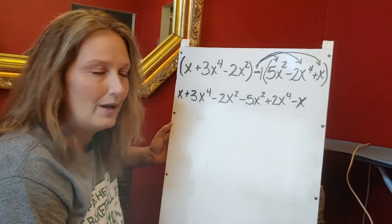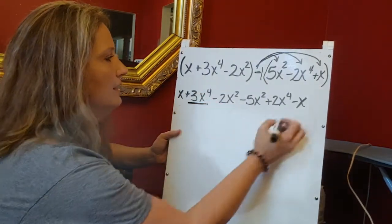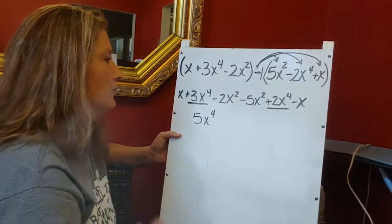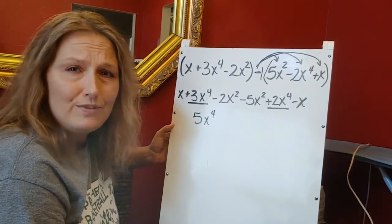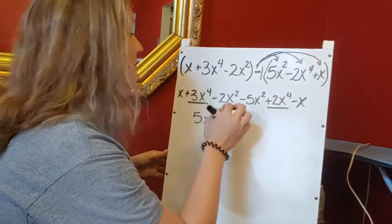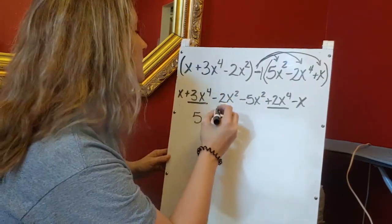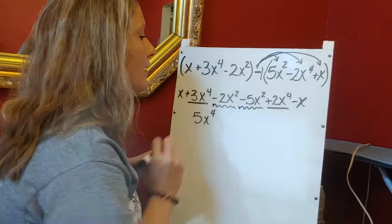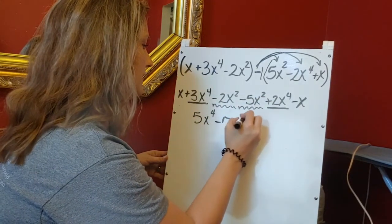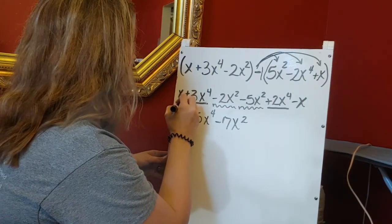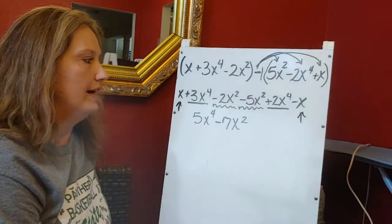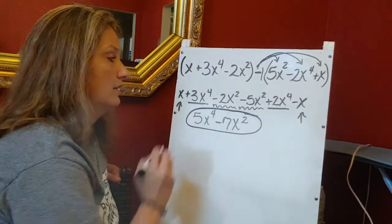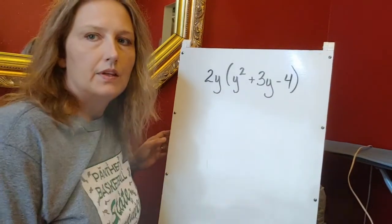Now that I've distributed, I'm just combining like terms, starting with the highest exponents first. I have three x to the fourth and two x to the fourth, which adds to five x to the fourth. I don't have a cubed term, so I move to the squared: negative two x-squared minus five x-squared gives me negative seven x-squared. Then x minus x gives me zero, so I don't need to write that. There's my final answer.